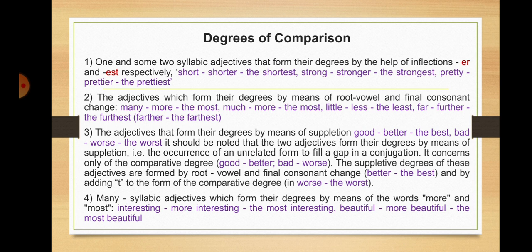The suppletive degrees of these adjectives are also formed by root vowel and final consonant change — 'better/the best' — and by adding -t to the form of the comparative degree in 'worse/the worst'. The fourth group is many-syllable adjectives which form their degrees by means of the words 'more' and 'most' — for example, 'interesting/more interesting/the most interesting', 'beautiful/more beautiful/the most beautiful'.